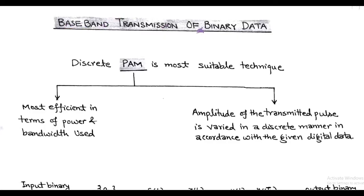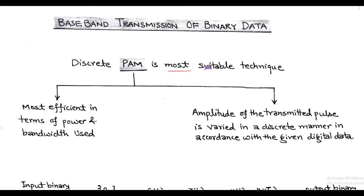In baseband transmission of binary data, discrete pulse amplitude modulation is the most suitable technique. This technique is most efficient in terms of power and bandwidth usage.